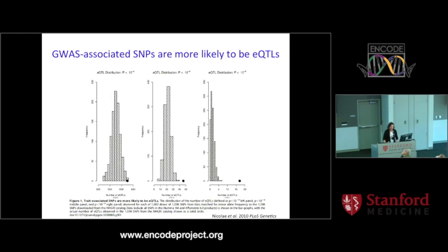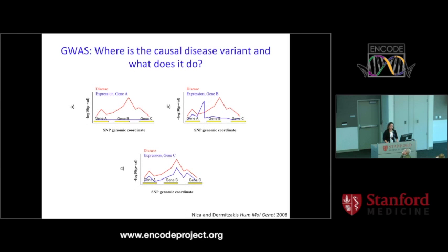We can ask about these eQTLs and their role in disease. Colleagues at the University of Chicago, including Nancy Cox, were among the first to show that GWAS SNPs were more likely to be eQTLs. The idea is simple: if you have a GWAS trait association and the same region is associated with expression levels of genes, you have a testable hypothesis about which gene might be involved in the mechanism. You overlay GWAS signal with eQTL signal looking for patterns where the two signals match. There has been a lot of sophisticated statistical methodology development in this area.